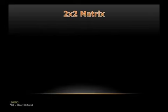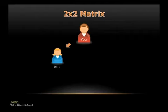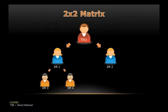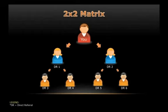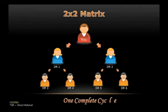First, let me explain the 2x2 matrix system and why it's called S2x2. This is you at the top. Your direct referral number 1 and your direct referral number 2. Your direct referral number 1 also has 2 referrals, as well as your direct referral number 2, who must also have 2 direct referrals. This continues to happen to infinity. It is called S2x2 because only 2 persons are strictly allowed to be under each person — 1 person only needs to invite 2 persons to keep the system running.